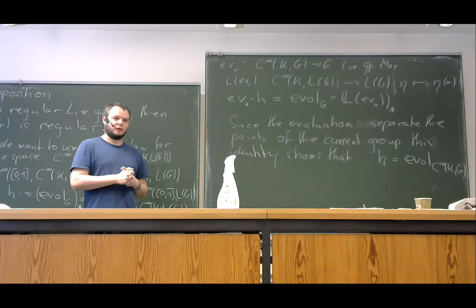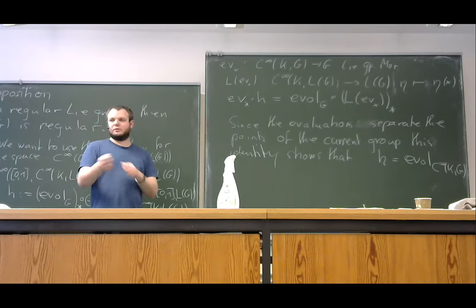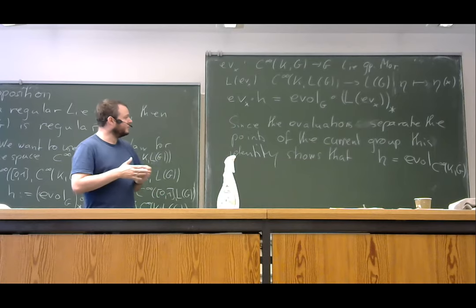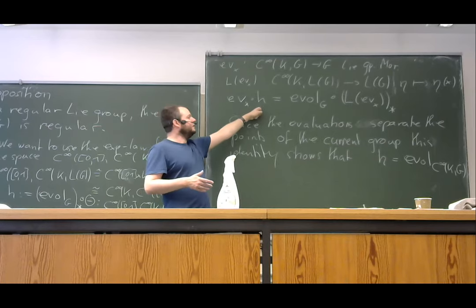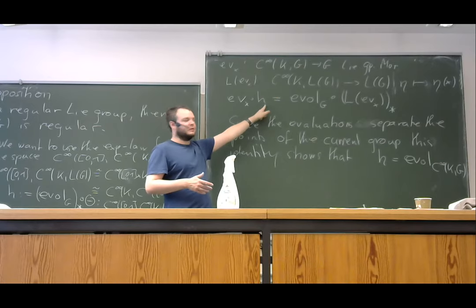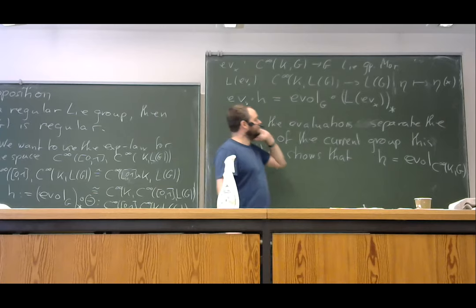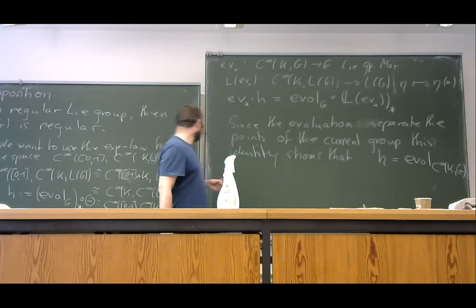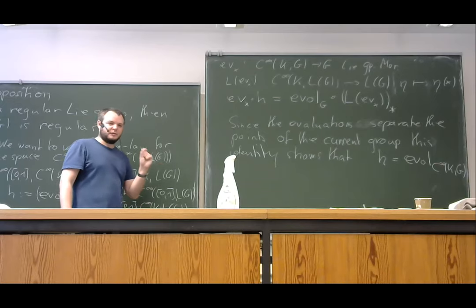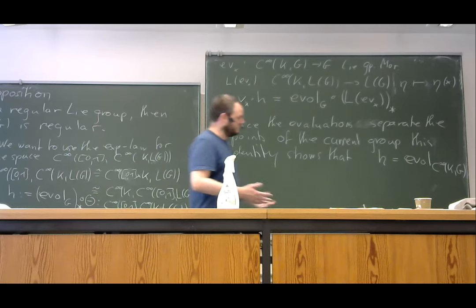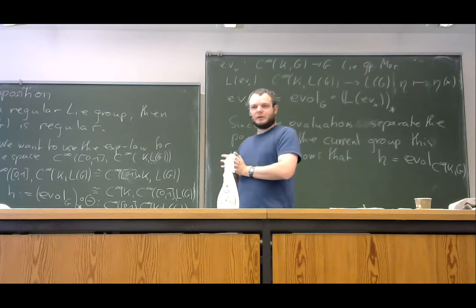Fortunately, we don't have to worry about differentiability, because we know from function-space properties that all of these operations are smooth. The solutions to the Lie-type equation of the current group are given by point-wise solving the Lie-type equations in the target group for every parameter k. This was the last thing I wanted to prove about the current groups.